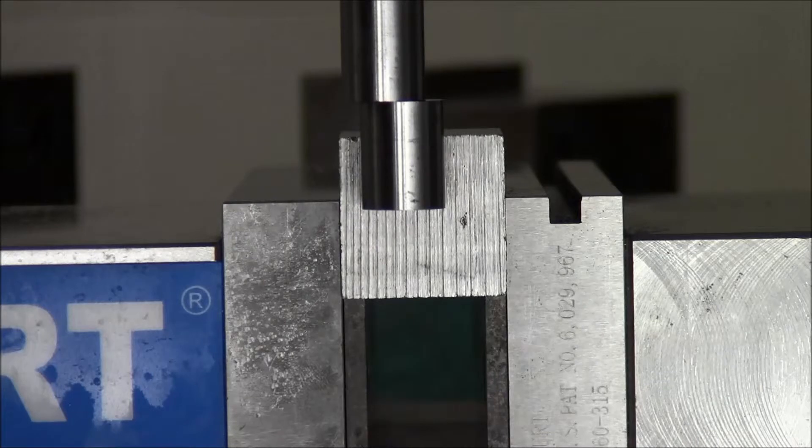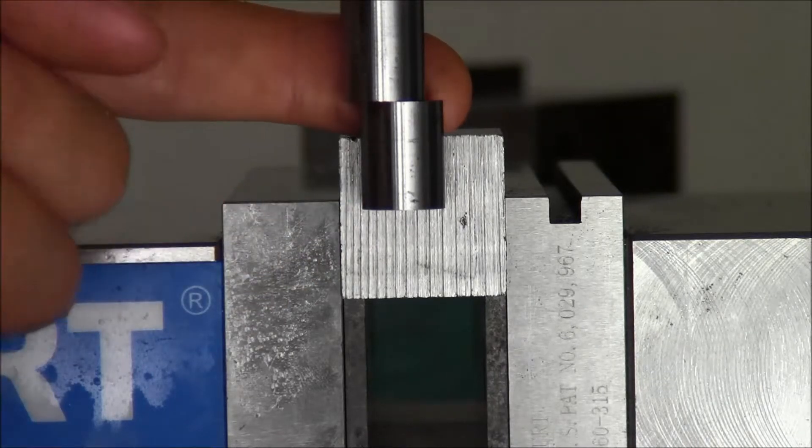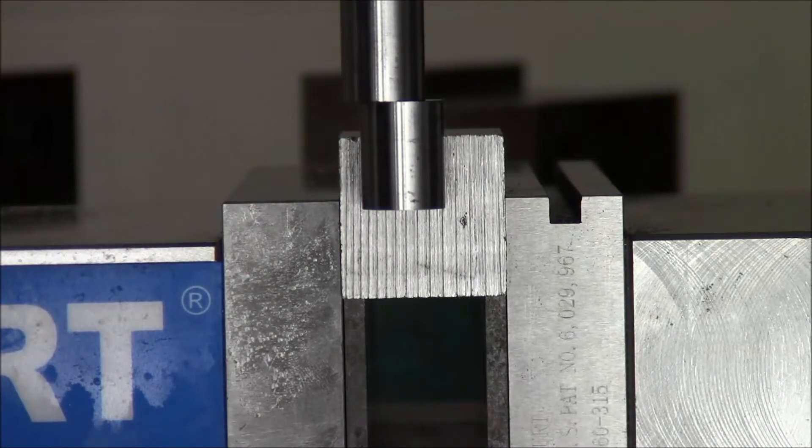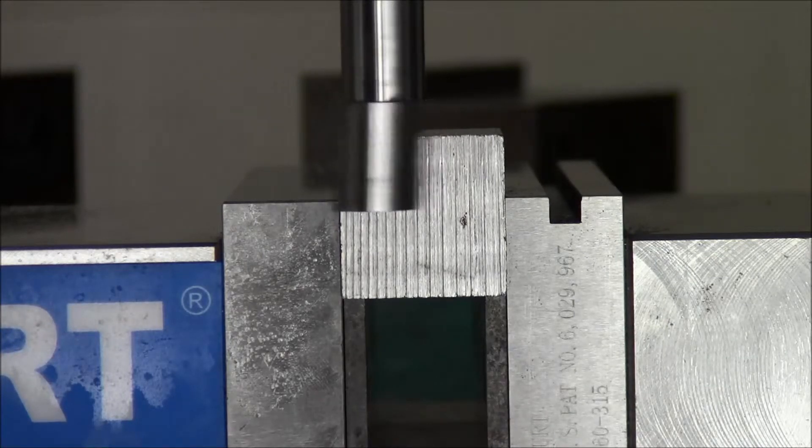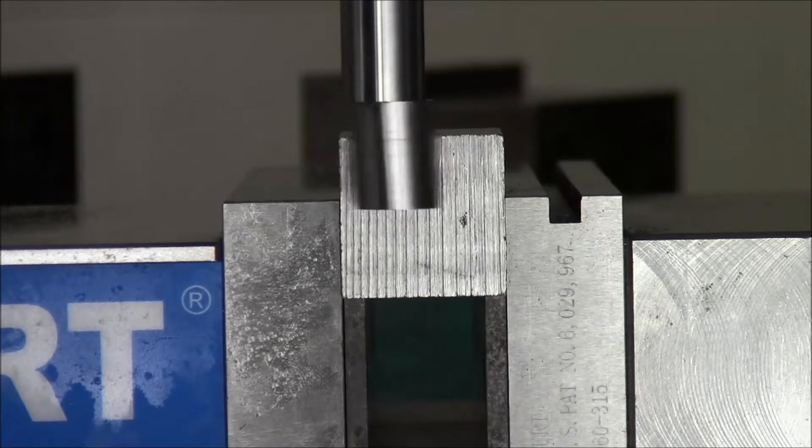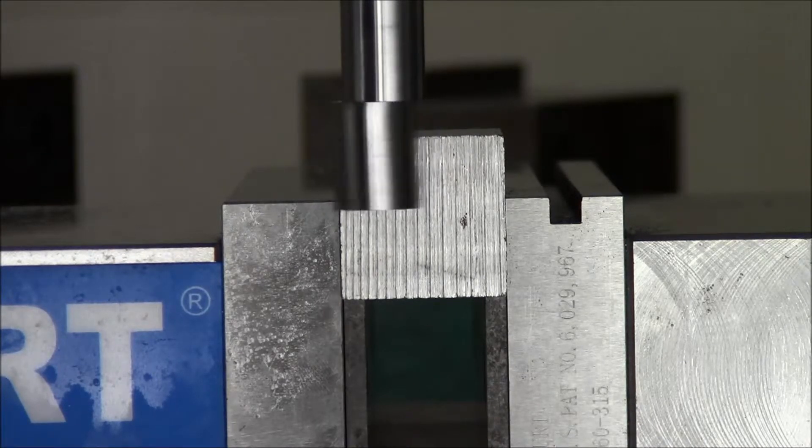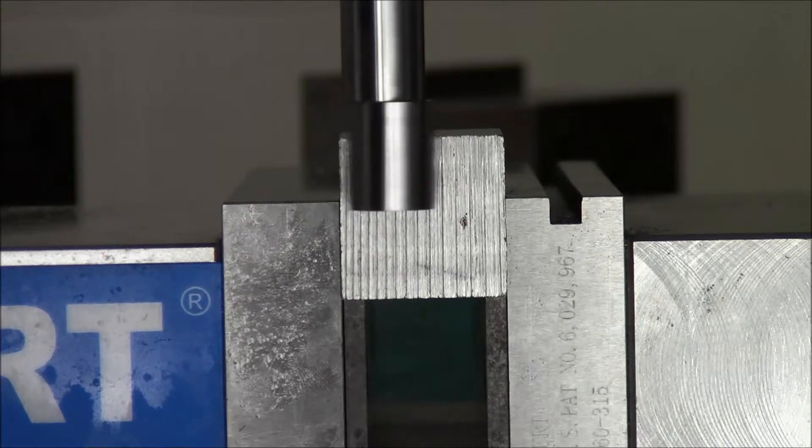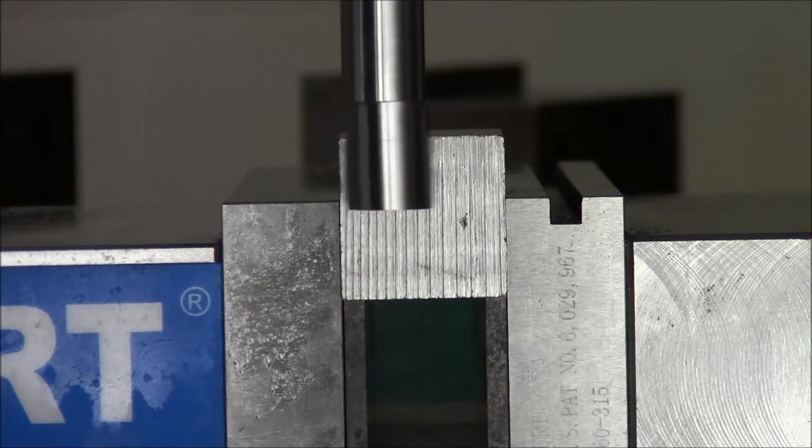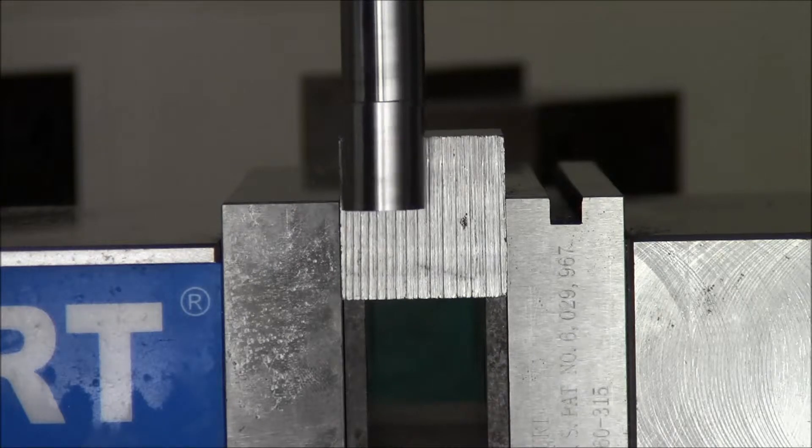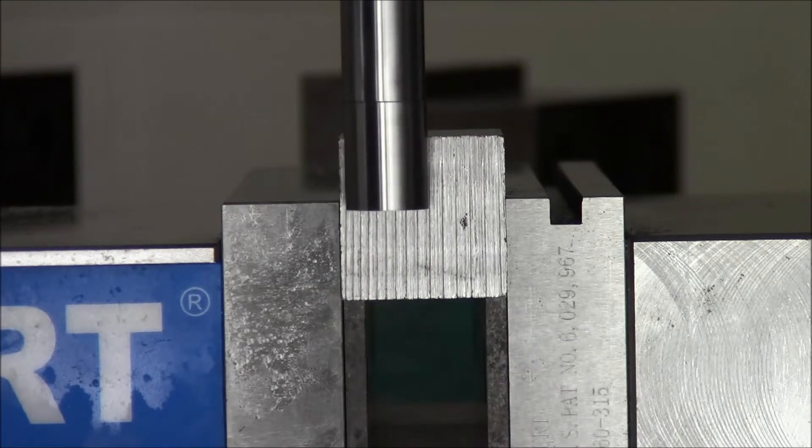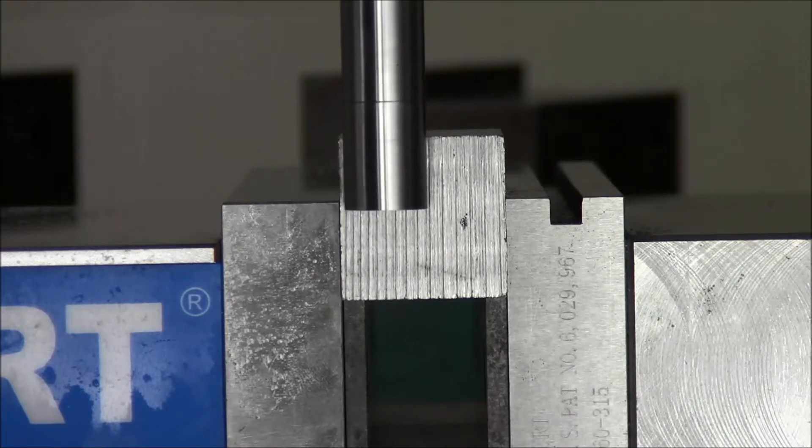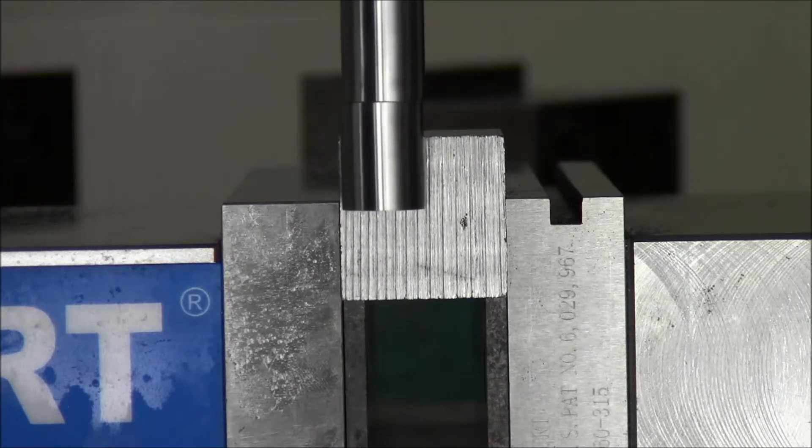Begin with the edge finder offset from the surface with the lower portion in the eccentric position. Start the machine with an RPM of 1000. Bring the workpiece toward the edge finder and you will see the lower portion become more and more concentric with the upper portion. As you will see, it is now nearly perfectly concentric. Continue moving the workpiece until you see the lower portion pop to the side, like so.